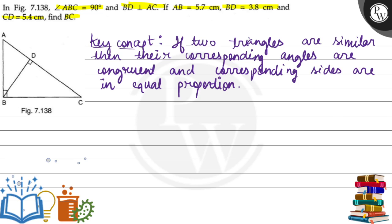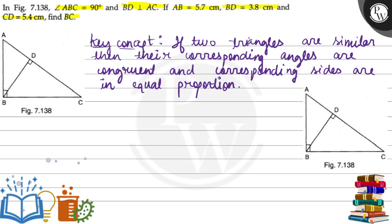In triangle ABC, BD is perpendicular to AC. Let angle BCD be equal to X. Then this angle is automatically 90 minus X.